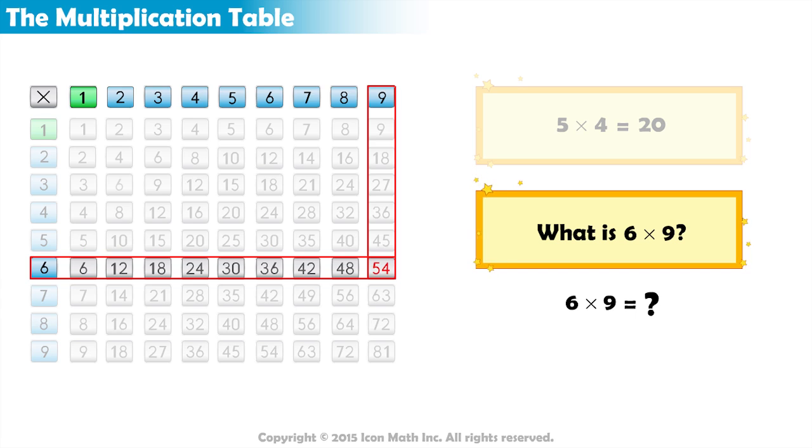54. So the product of 6 times 9 is 54. And we replace the unknown in the equation.